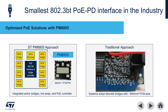The PM8805 PoE interface chip is the smallest 99-watt capable interface in the industry. It's a complete 802.3BT interface, bridge, and controller in one package. The PM8805 integrates dual active bridges, 8 total 100-volt MOSFETs, a high-current 100-volt hot swap MOSFET, and a PoE controller in a single 64 square millimeter package. Compare this to the traditional approach that consumes 800 square millimeters of PCB area just for a discrete passive bridge solution.